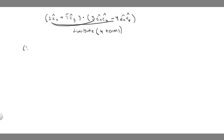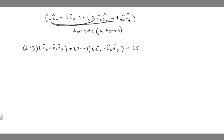The result will look something like: 2 times 3, e x-hat dotted with e x-hat e x-hat; our second term will be 2 times minus 4, e x-hat dotted with e x-hat e z-hat; our third term will be 5 times 3, e y-hat dot e x-hat e x-hat; and our fourth term will be 5 times minus 4, e x-hat, with directions e y-hat dotted with e x-hat e z-hat.